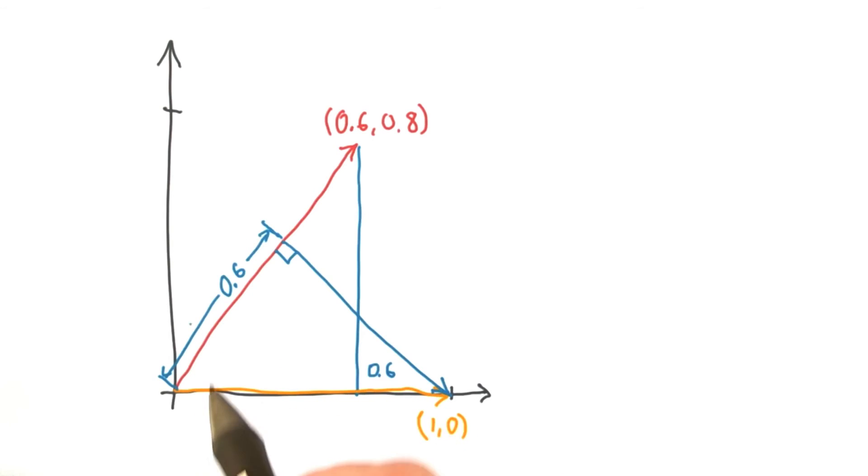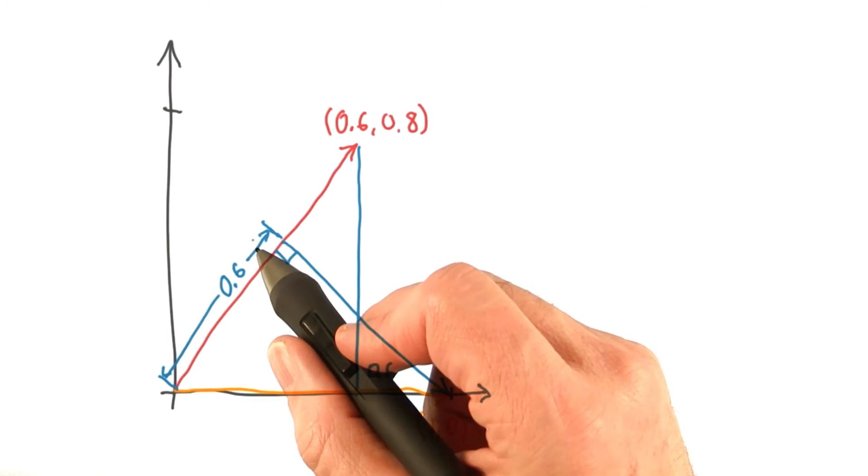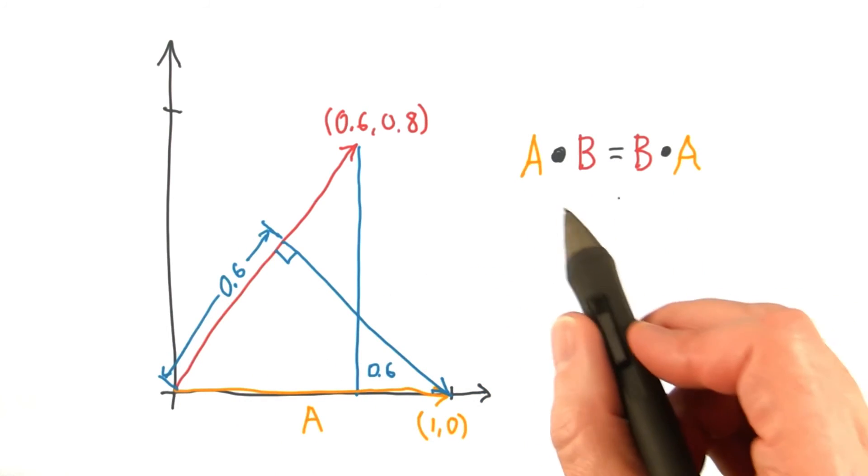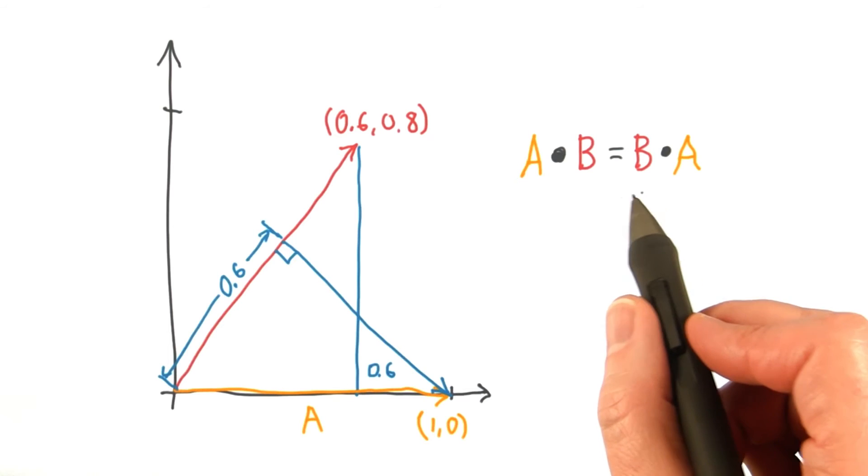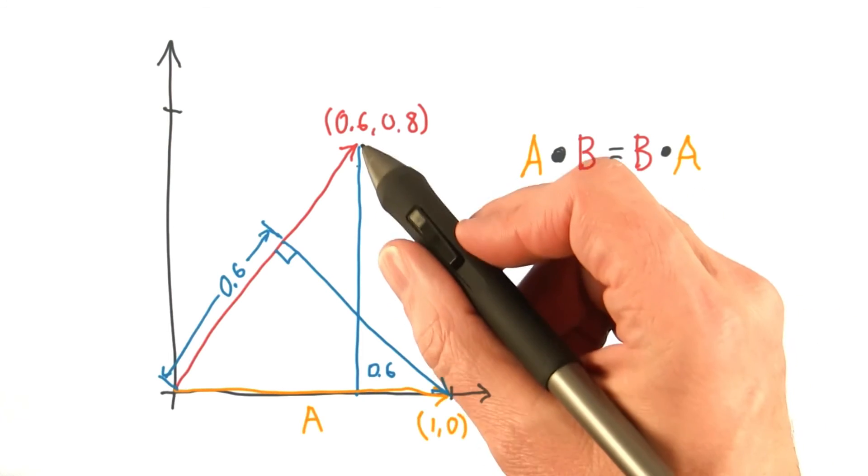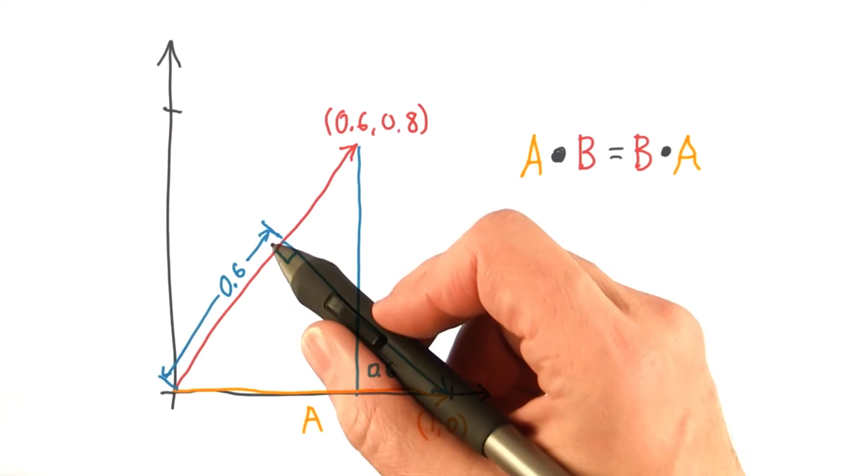This works both ways. Our initial vector can also be projected onto the second vector and get you the same length 0.6. In other words, the dot product operation is commutative. A dot B gives the same answer as B dot A. Projecting one way gives the same answer as projecting the other.